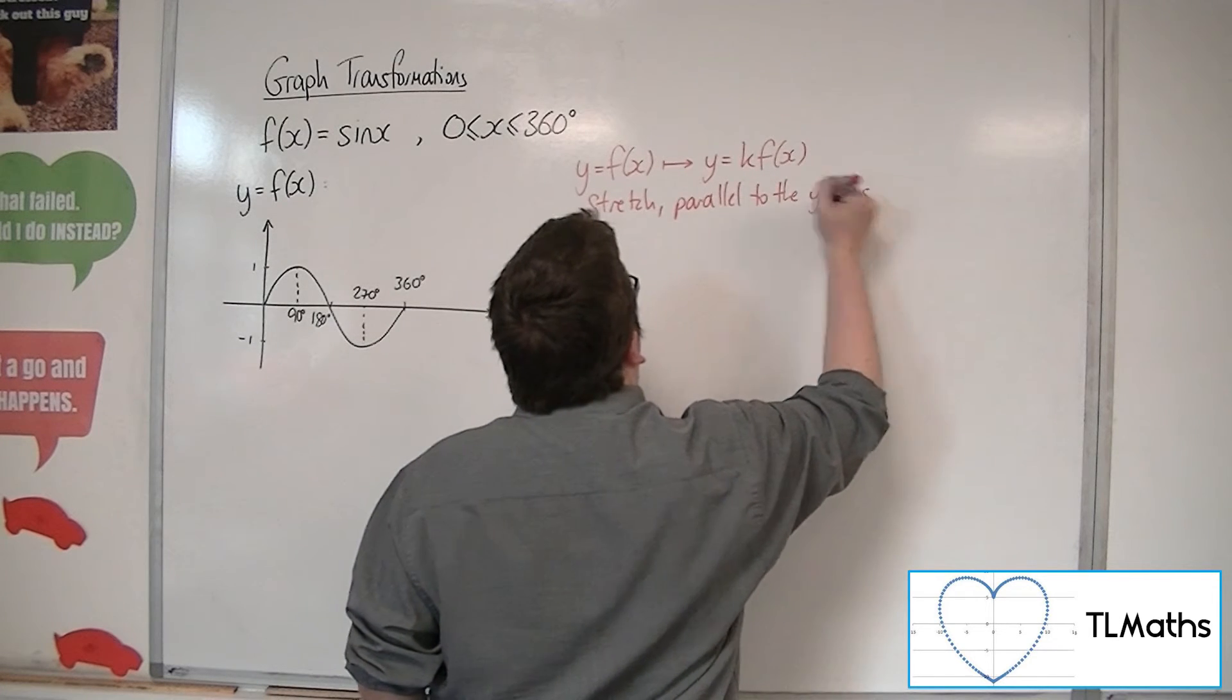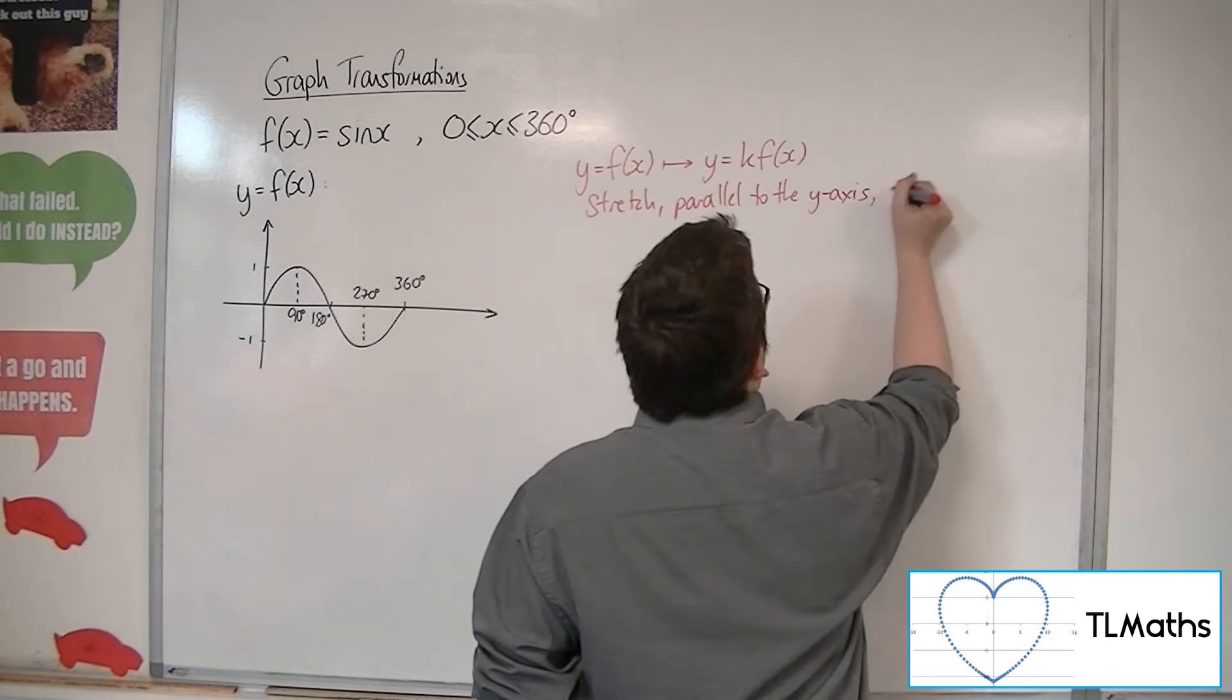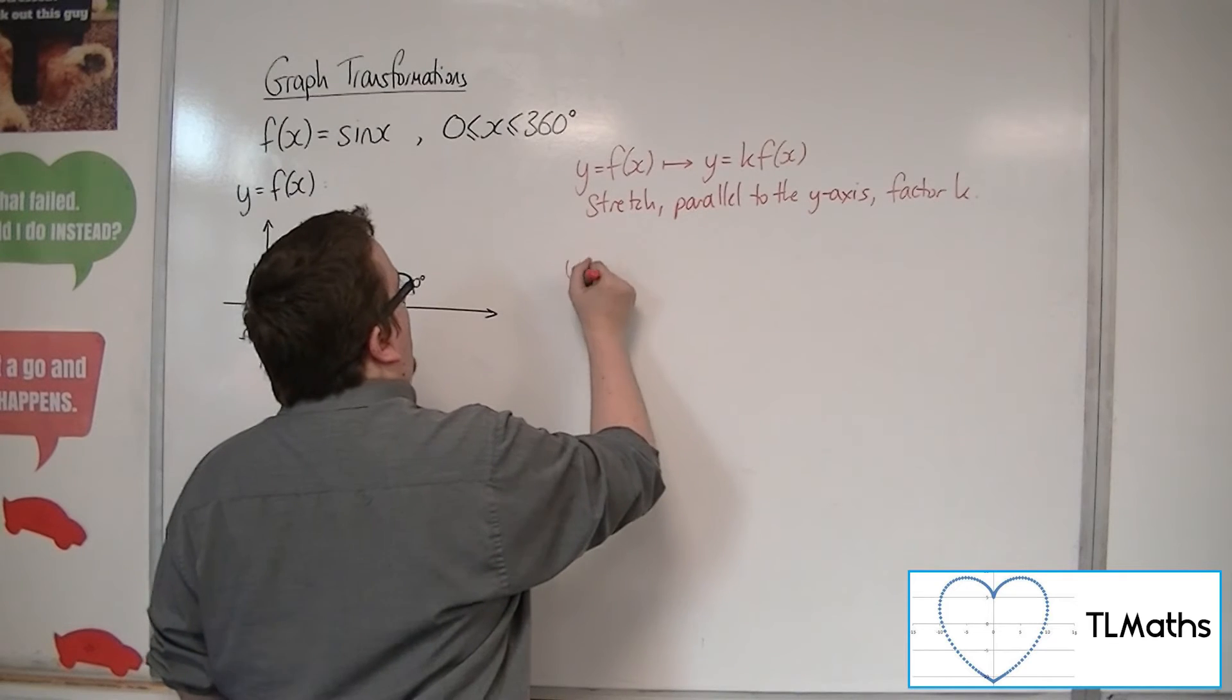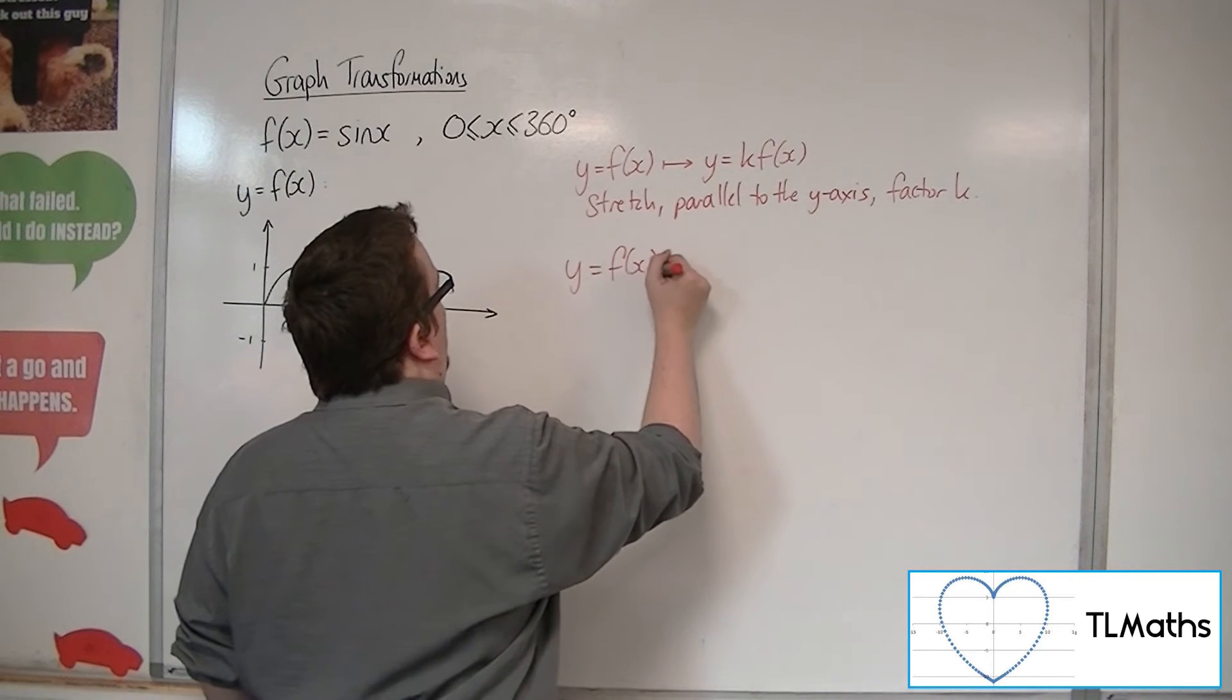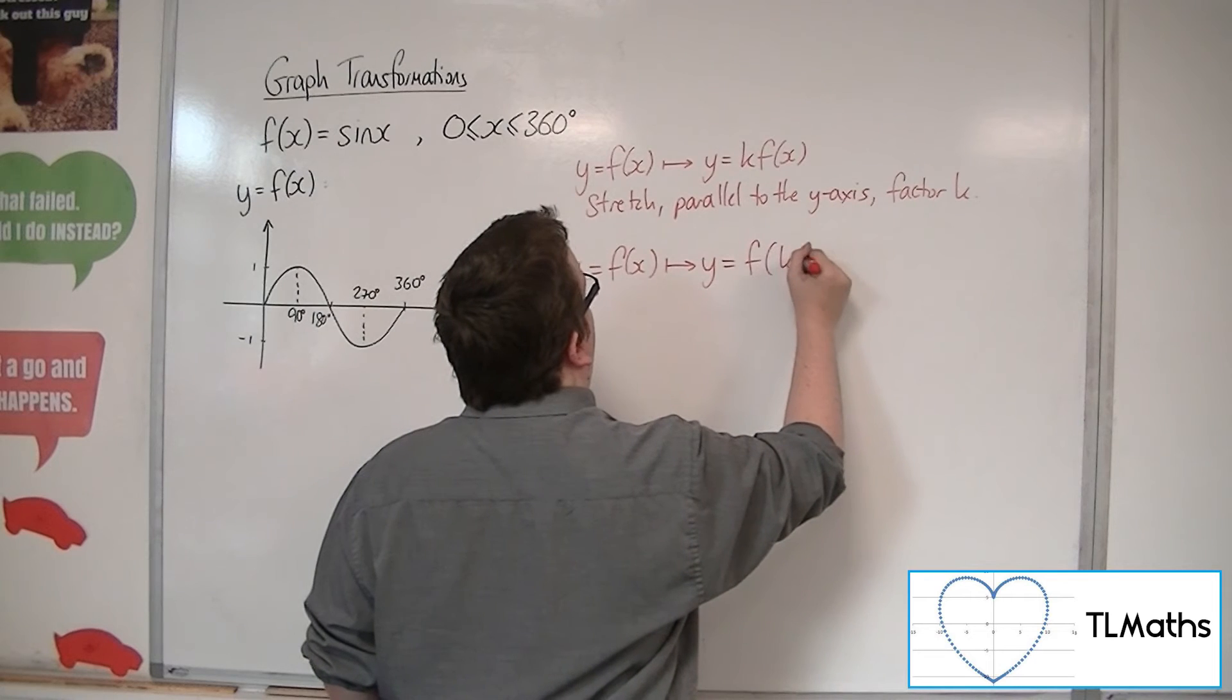If it's outside the f, then it's affecting the y direction by factor k. If, however, y equals f(x) is being transformed to y equals f(kx),